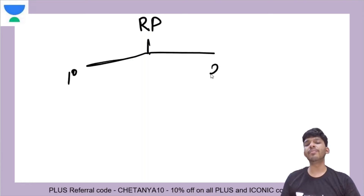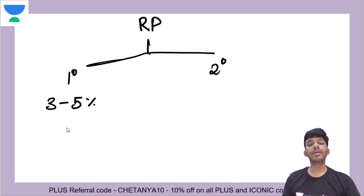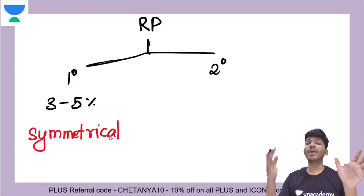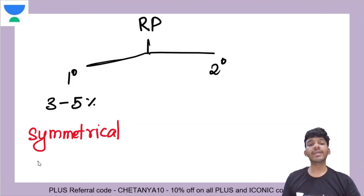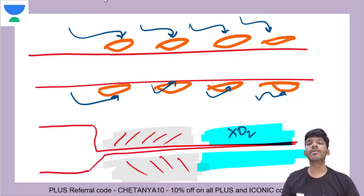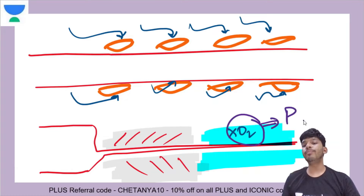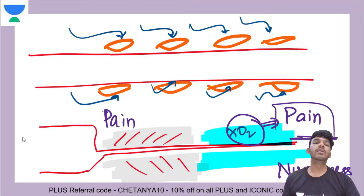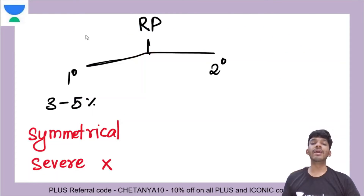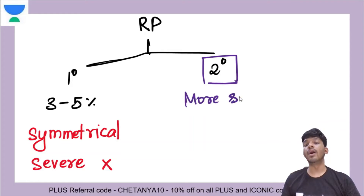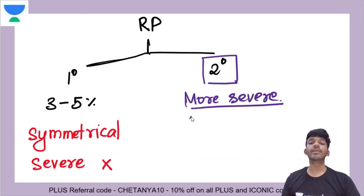Primary generally means there is no underlying cause, and it can occur in 3 to 5% of the population. It generally happens symmetrically — in both left and right hands — and is not severe; it does not progress. The person will experience pain and numbness in the region due to reduced oxygen. If involvement is symmetrical and not very severe or progressive, it is primary Raynaud's syndrome. Secondary Raynaud's syndrome is generally more severe, indicates an underlying condition, and is usually asymmetrical.